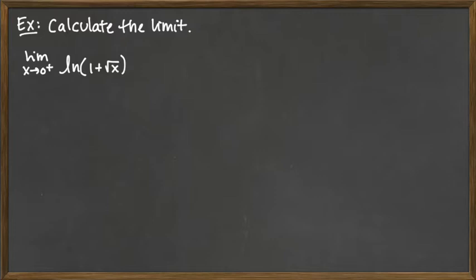Now let's look at this function for just a minute here. We need the 0 plus side – so just the right-hand side limit – because of the square root part